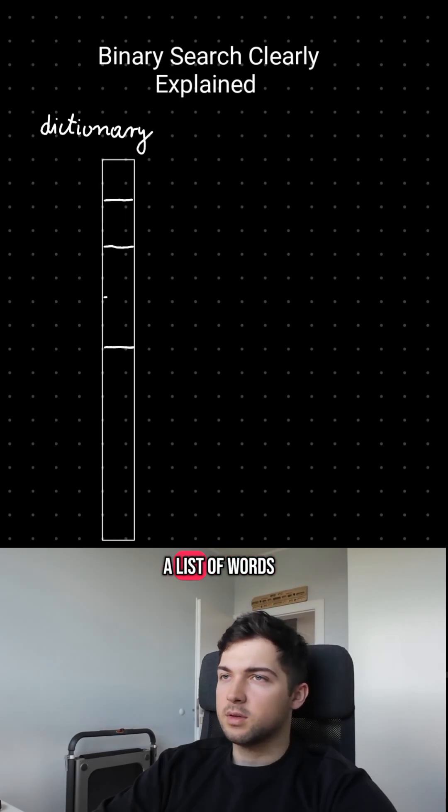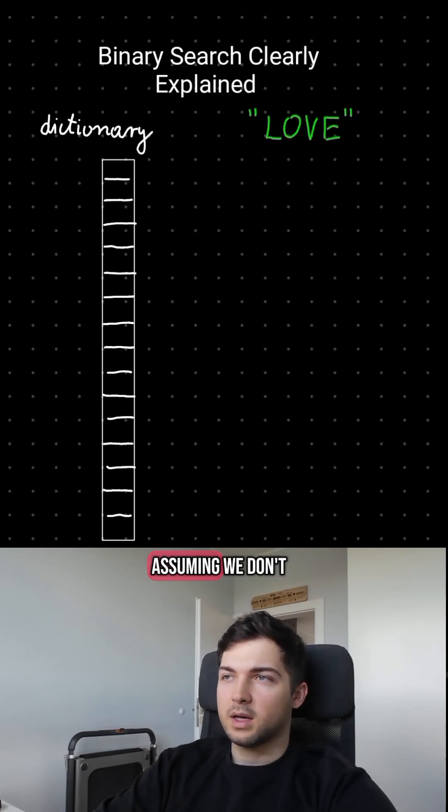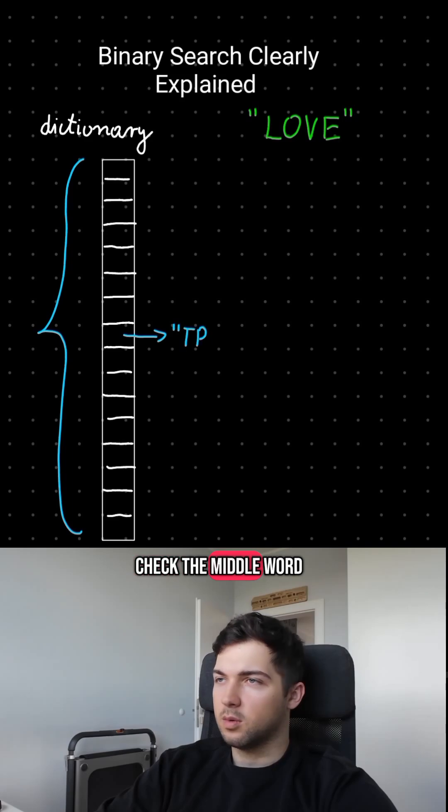Let's say that a dictionary is a list of words and the word that you're looking for is somewhere inside. Assuming we don't know anything about a dictionary other than that it's sorted alphabetically, then the best move is to check the middle word.